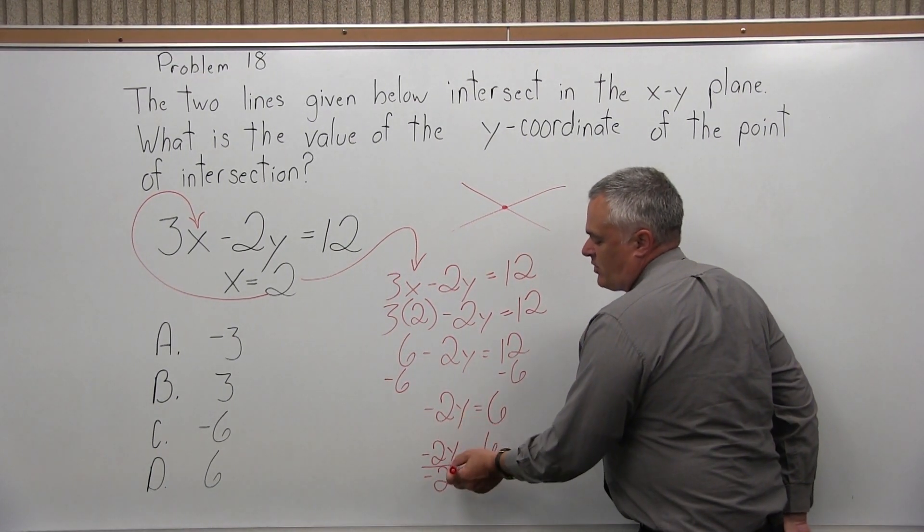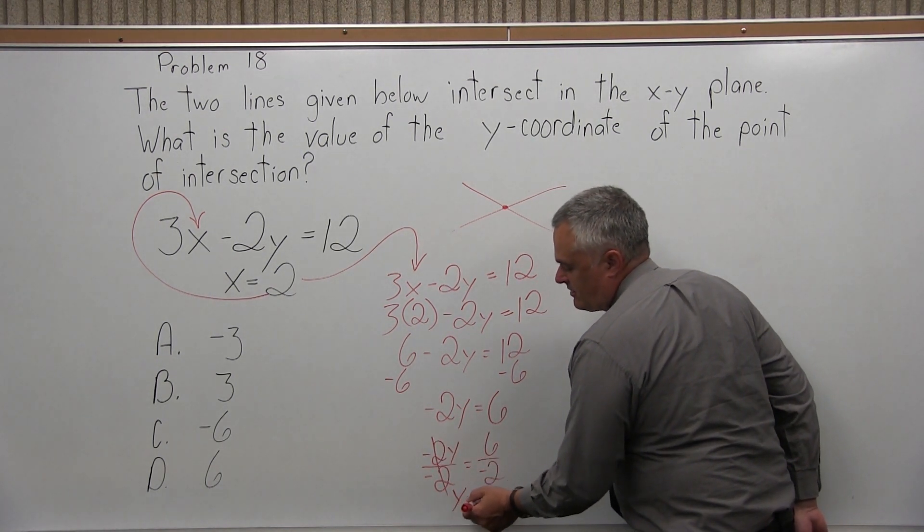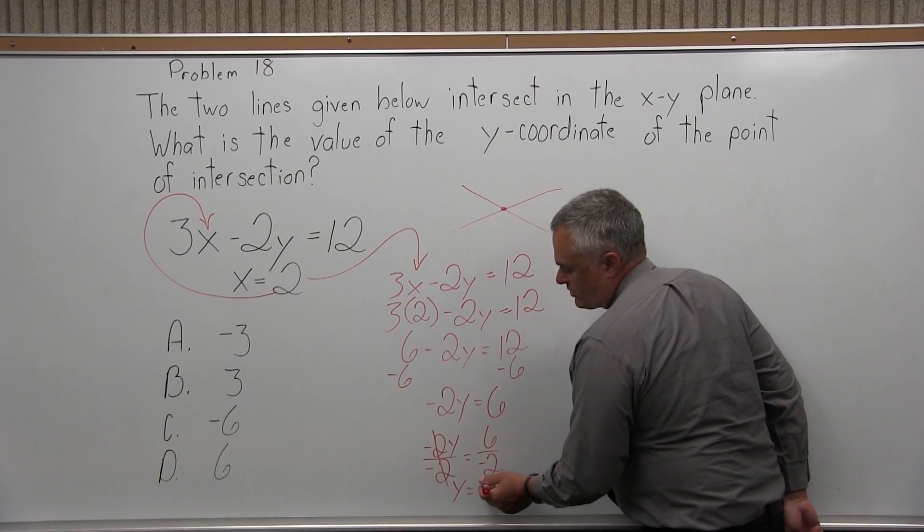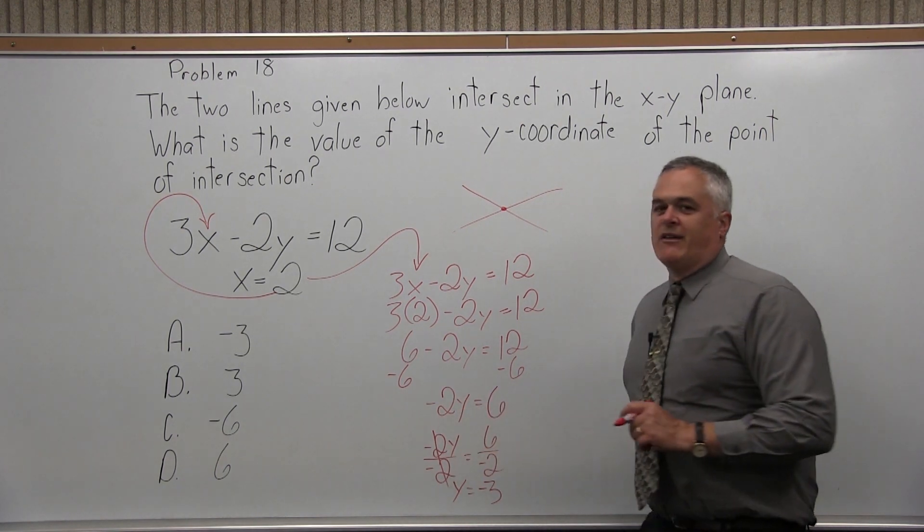I'm going to go negative 2y divided by negative 2 equals positive 6 divided by negative 2. On the left, negative 2y over negative 2 - the 2s cancel, the negatives cancel, giving me y. On the right, 6 divided by negative 2. 6 over 2 reduces to 3, but it's positive 6 over negative 2. So I have a negative 3.